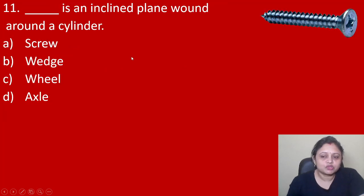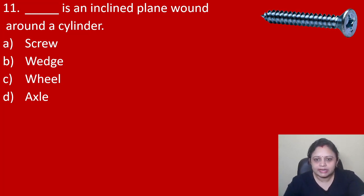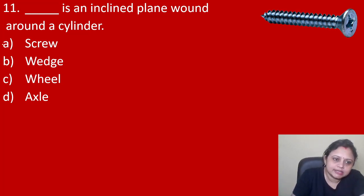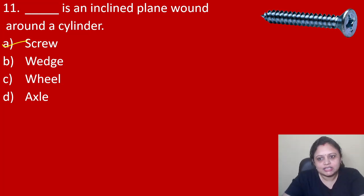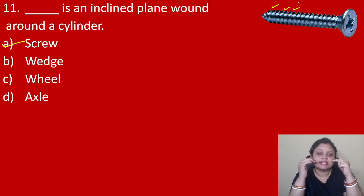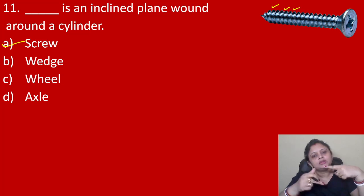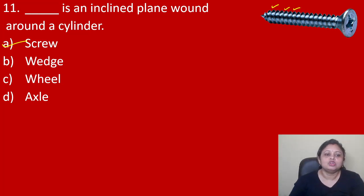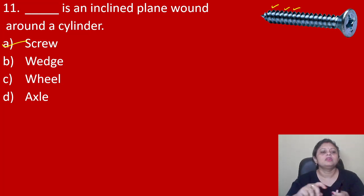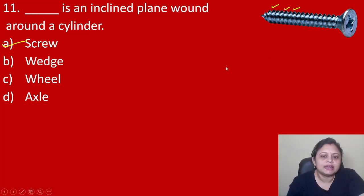Coming to the next question: dash is an inclined plane wound around a cylinder. The correct answer is screw. In the case of a screw, there is a fixed rod-like structure and around it the inclined plane is wound — that is what a screw is. So the correct answer is option A, screw.